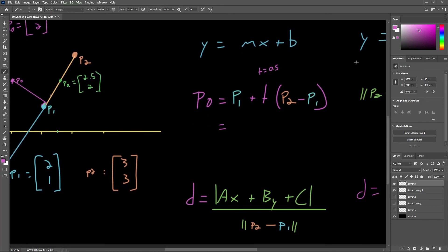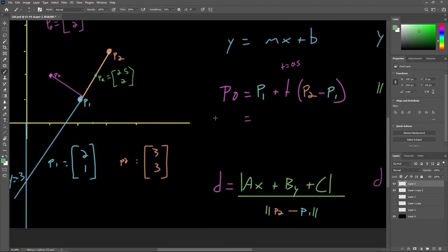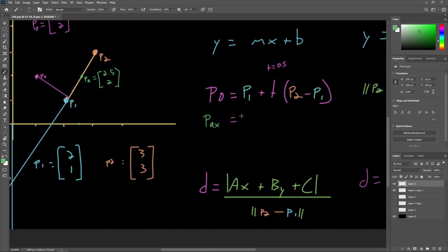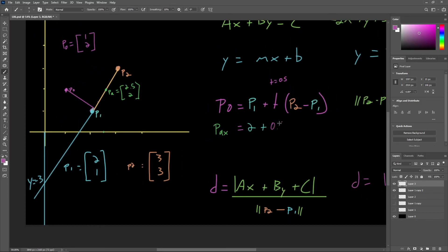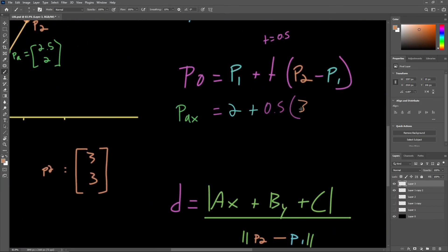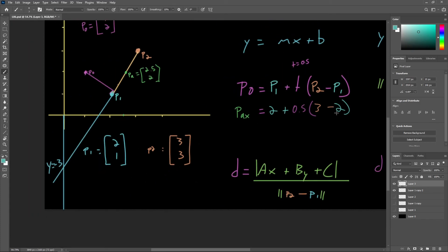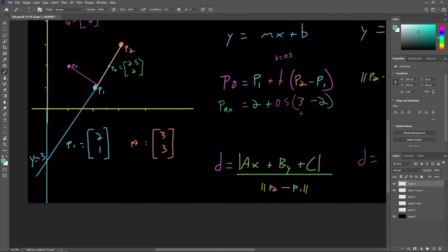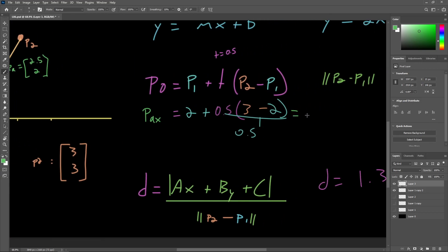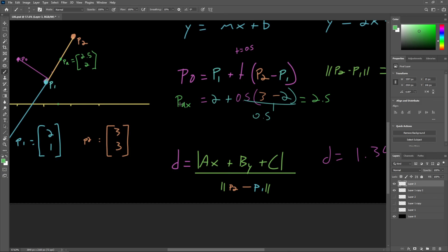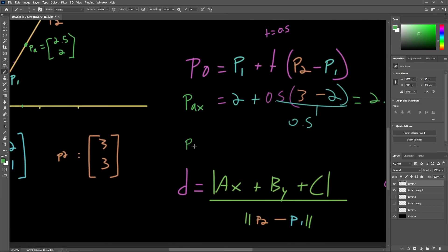For the X components, let's use this green color here to refer to point alpha. So the X components will be equal to the X component of P1, so that's 2 plus our T value 0.5 times X component of P2, 3 minus 2, P2 minus P1. So quickly solving this, 3 minus 2 is 1 times 0.5 is 0.5 plus 2. So the X component of P alpha will be equal to 2.5.